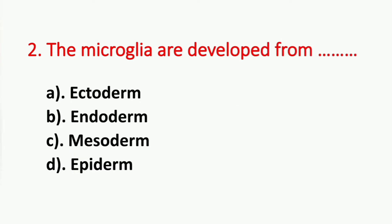Question number 2. The microglia are developed from? Option A: Ectoderm. Option B: Endoderm. Option C: Mesoderm. Option D: Epiderm. The answer is Option C, Mesoderm.